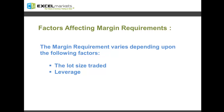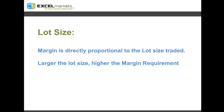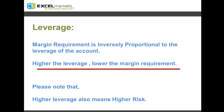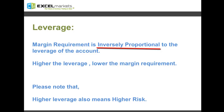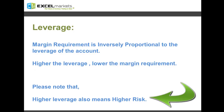We shall now discuss the different factors which affect the margin requirement calculations. Margin requirement varies depending upon two factors: A, the lot size traded, and B, the leverage for your account. Margin requirement is directly proportional to the lot size traded — larger the lot size, that is bigger the trade position which you open, the higher the margin requirement. Margin is inversely proportional to the leverage of the account, so higher the leverage, lower will be the margin requirement. It is also important to note that higher leverage also means higher risk.